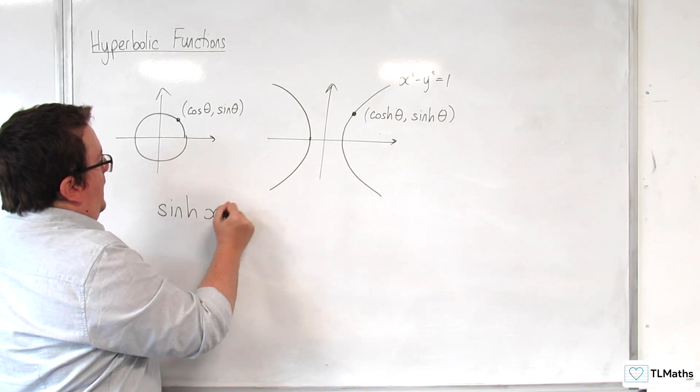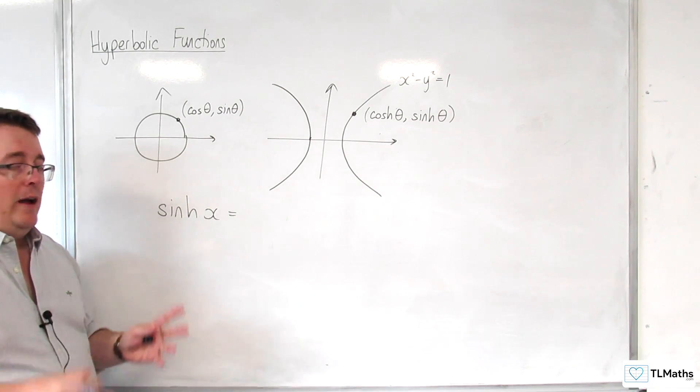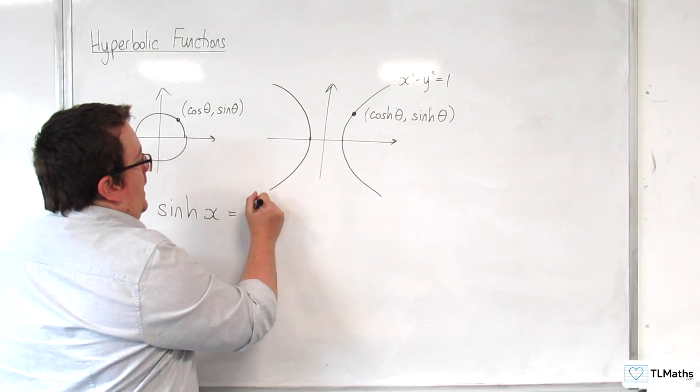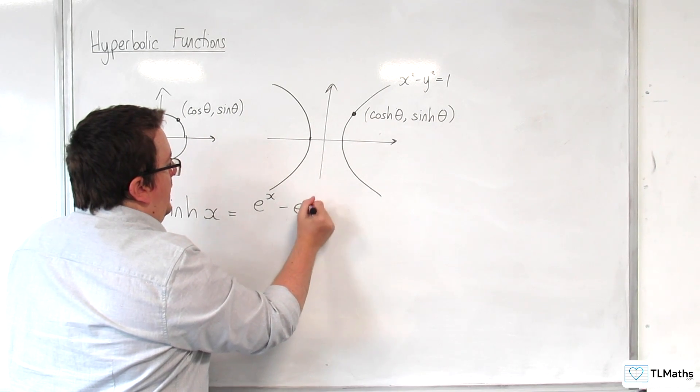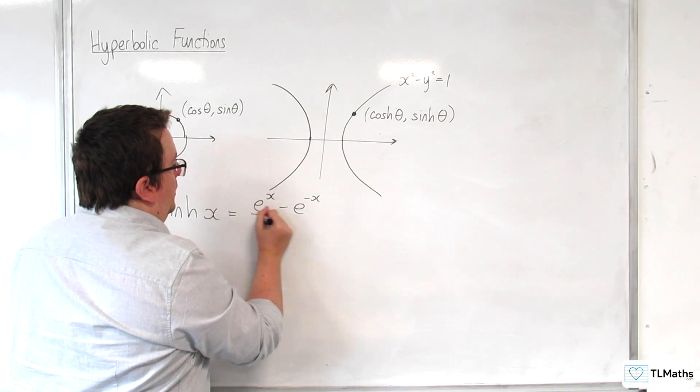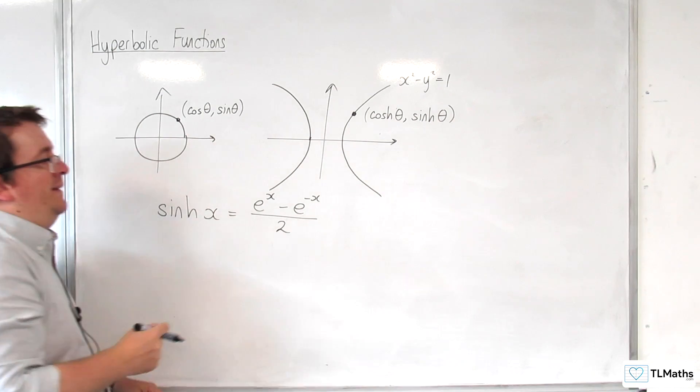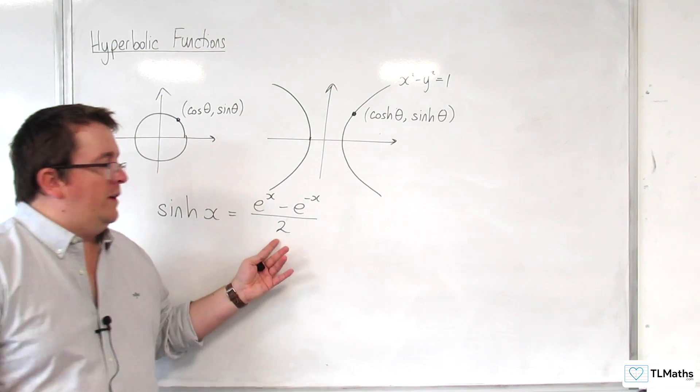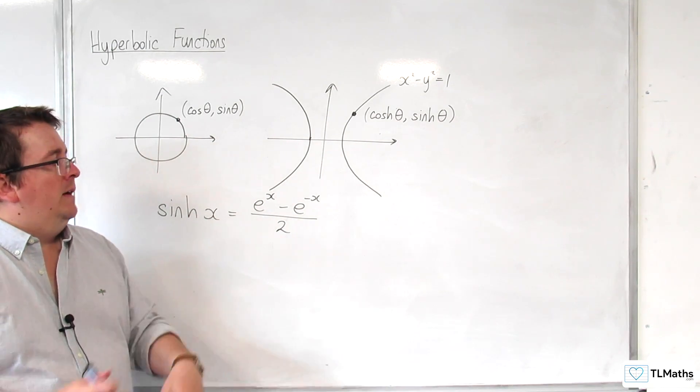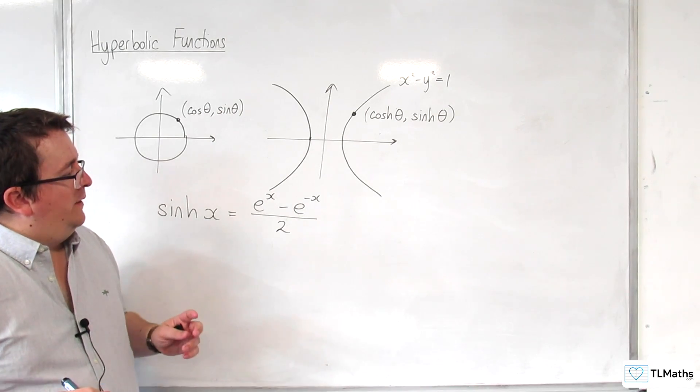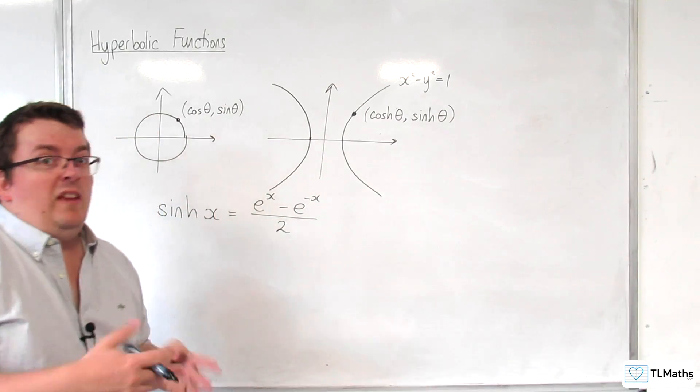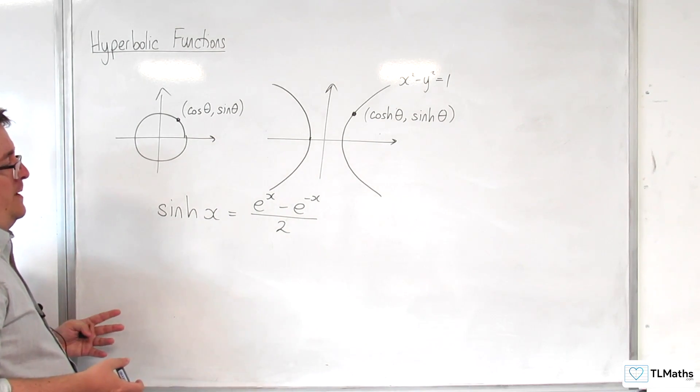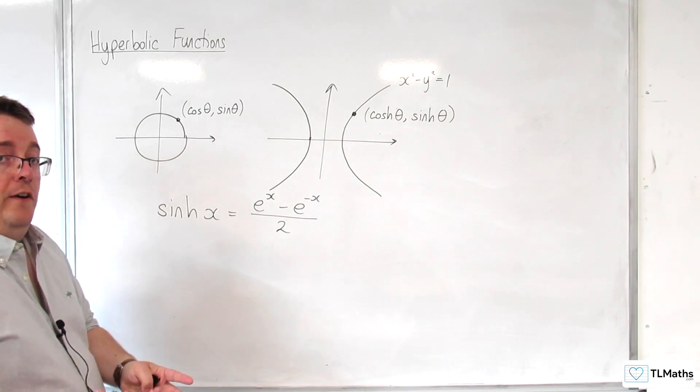And sinh of x is equal to – so this is how it's defined – as e to the x, take away e to the minus x, divided by 2. Now, this looks quite complicated, but when it comes down to its actual usage, it's not really too bad. So, this is how it is defined.